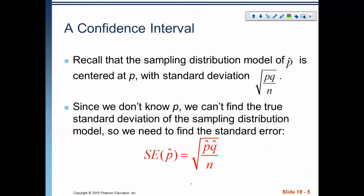The first thing we want to introduce is the confidence interval. A sampling distribution for a model of p-hat is centered at p with standard deviation equal to the square root of pq over n. We don't know p, and we can't find the true standard deviation of the sampling distribution, so we estimate it with the standard error — the square root of p-hat times q-hat over n, where q-hat is 1 minus p-hat.